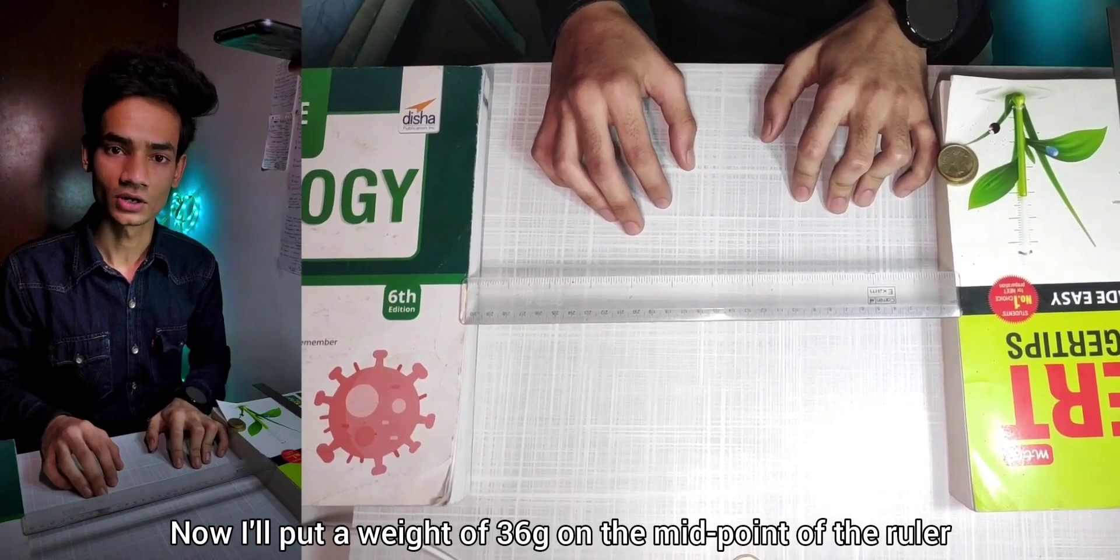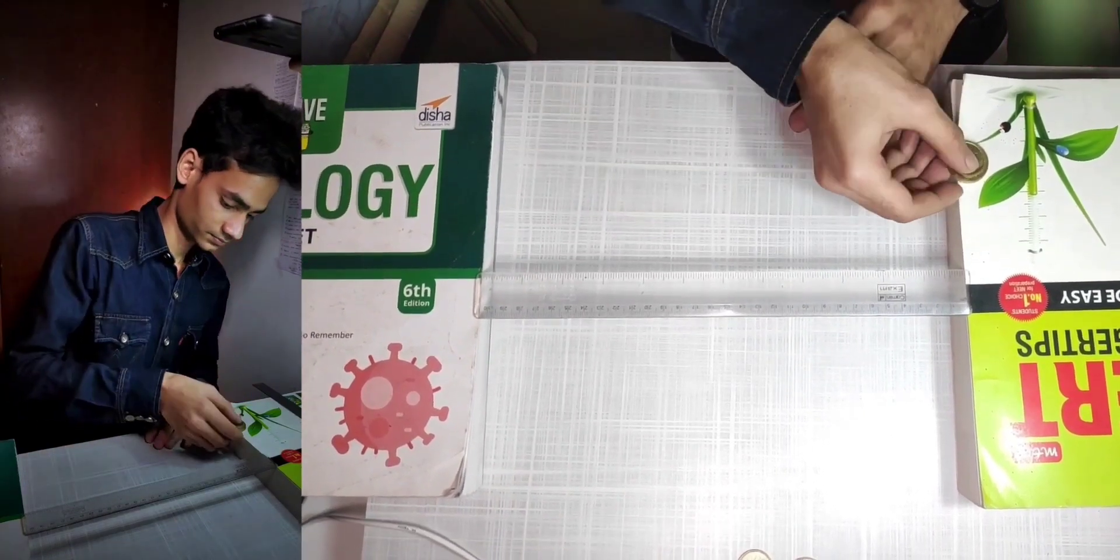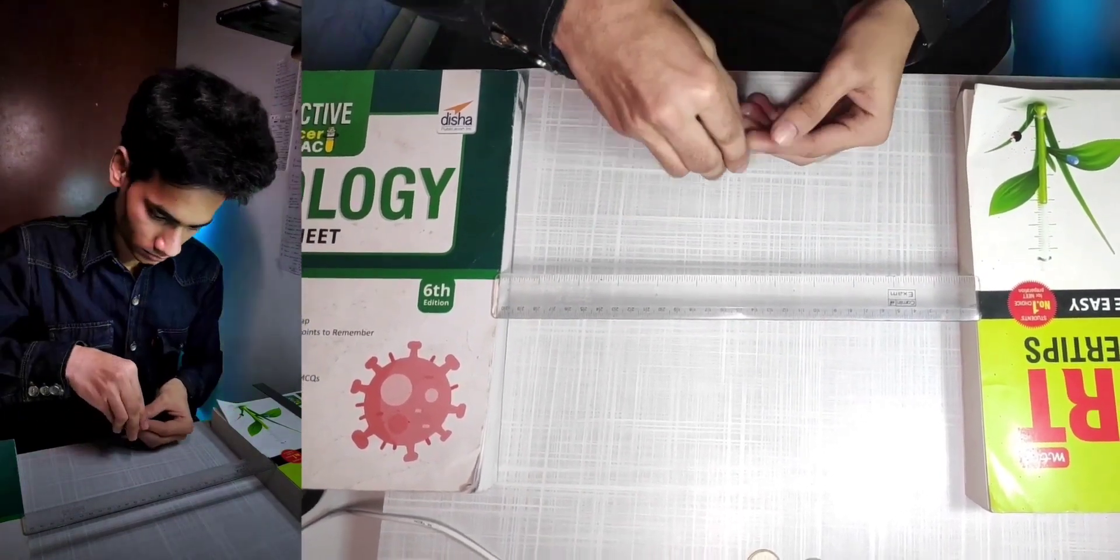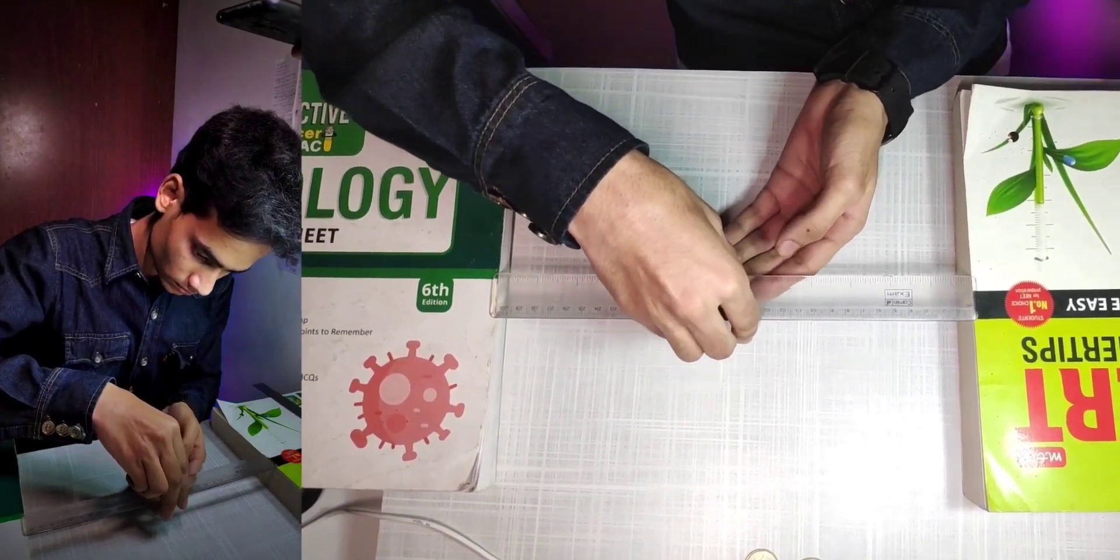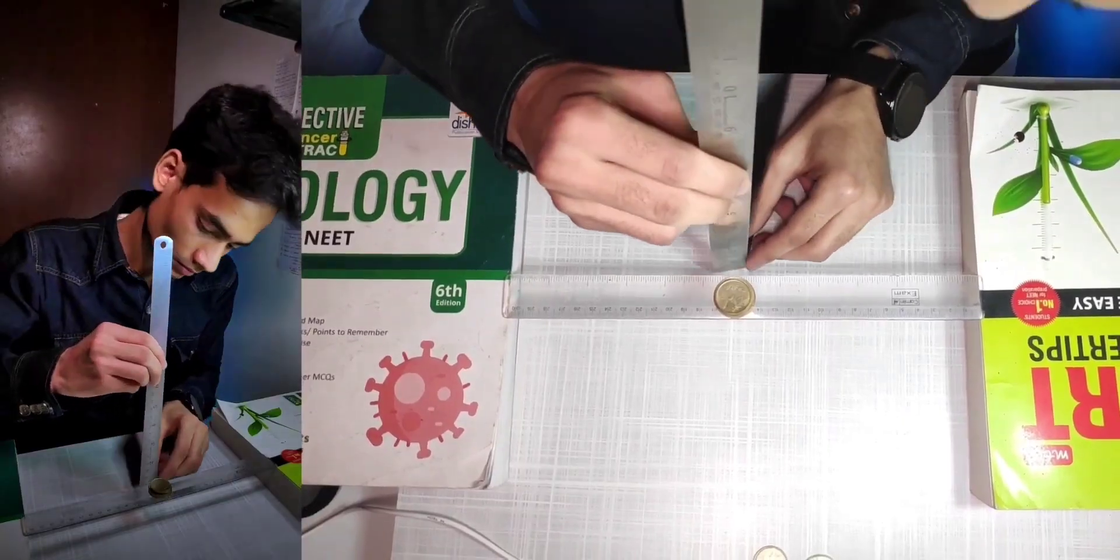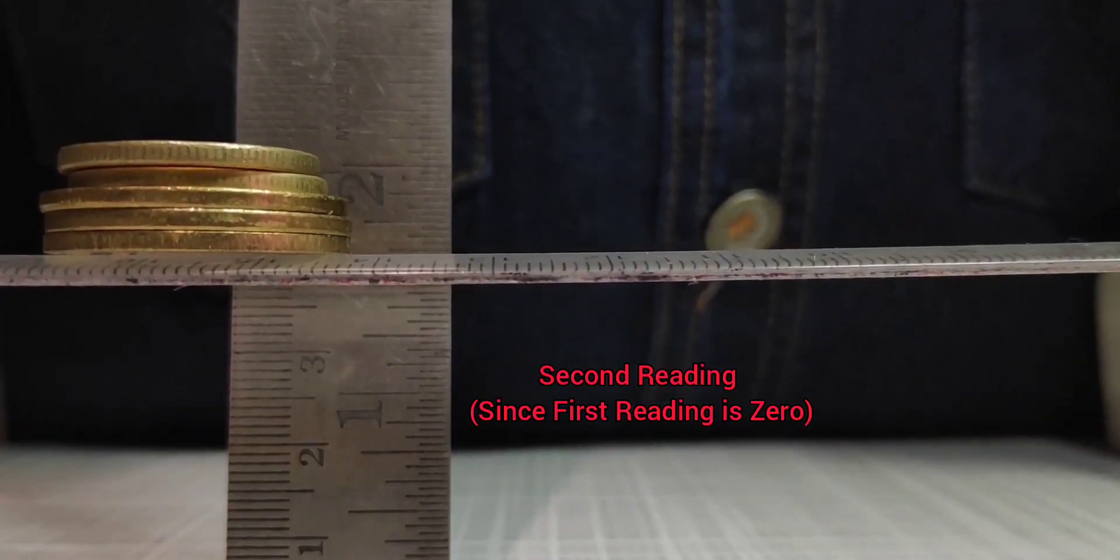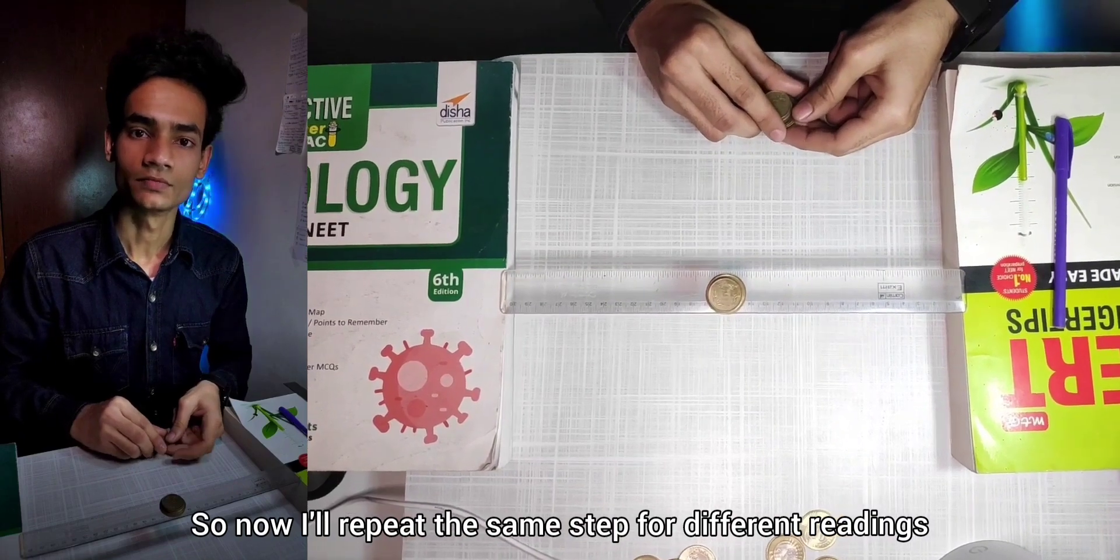Now I'll put a weight of 36 grams on the midpoint of the ruler and then measure the depression. So now I'll repeat the same step for different readings.